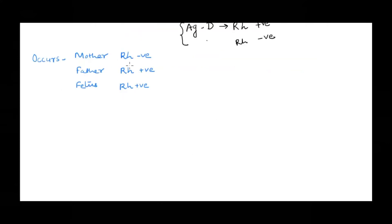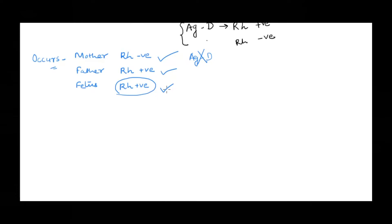RH incompatibility is a condition that occurs when the mother is RH negative but the fetus is RH positive, which happens when the father is also RH positive. So the mother does not have antigen D on her RBC, but the fetus would contain antigen D on its RBC, creating incompatibility with respect to the RH factor.